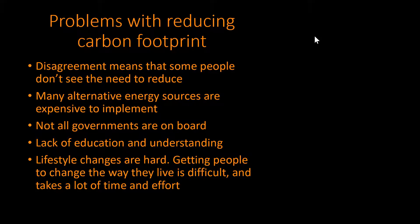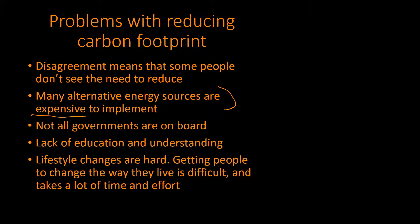There are problems with reducing the carbon footprint though, because it's not as easy as it sounds. First, people disagree on how much we need to reduce our carbon footprint. We can be pretty sure we are having an impact on climate change, but we don't have an exact figure on how much. Because people disagree so much, if some think we're not having that much of an impact, they will be less likely to implement alternative energy sources. Which brings us to the second point — it's expensive. Implementing new technology is always going to be expensive, and people don't want to do it because they're comfortable doing what they already do.